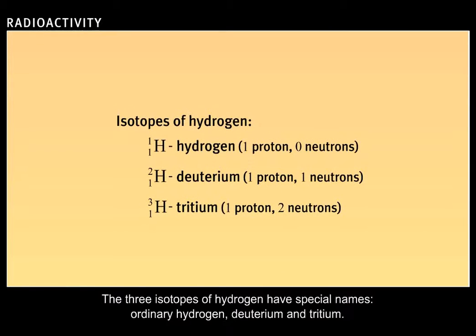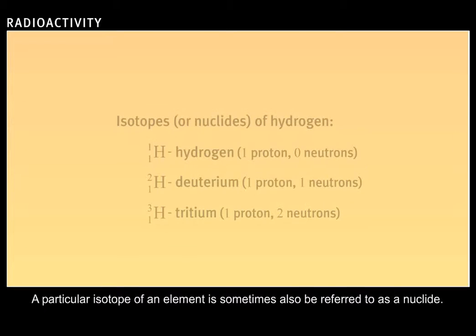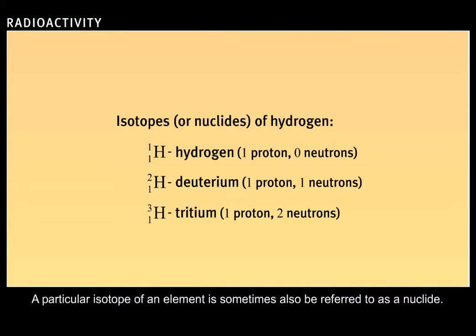The three isotopes of hydrogen have special names: ordinary hydrogen, deuterium, and tritium. A particular isotope of an element is sometimes also referred to as a nuclide.